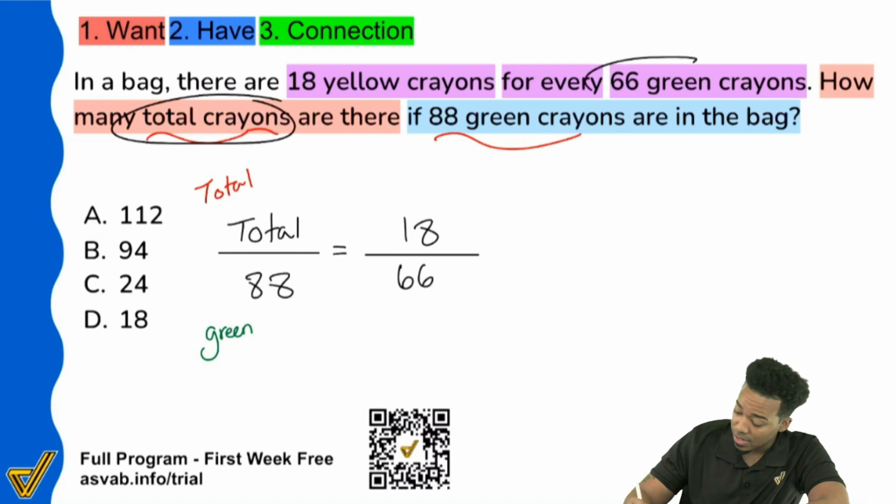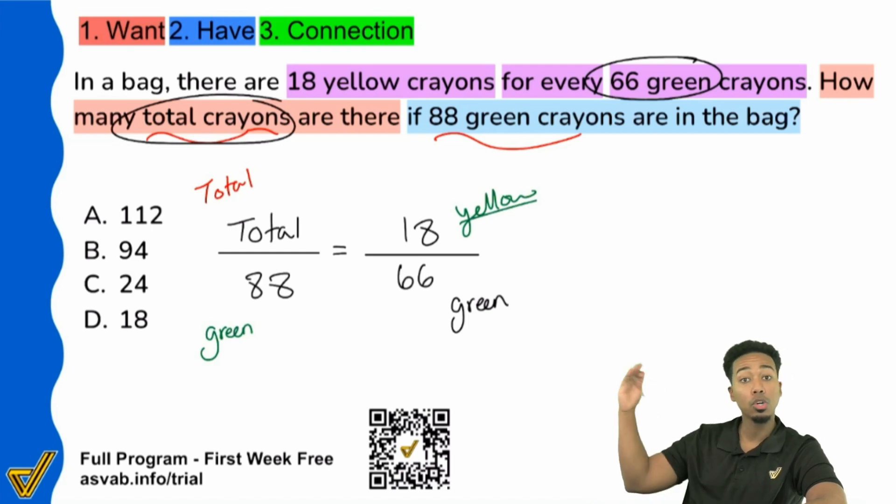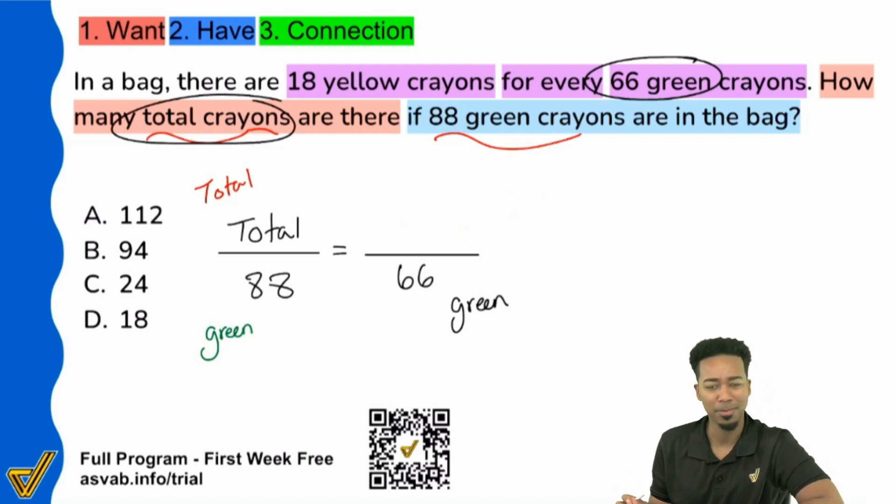Again, the 66 green, that's right there. That's good. That's fine. But the 18, that does not represent total. We have to compare the same things in the same way. Yeah, that's green, but the 18 represents yellow. And that is not correct. We want total over green, total over green. Again, compare the same things in the same way. Write that down if you didn't know that already. And also, if you see that this is making sense, please go ahead and leave a comment letting me know how much this helped you. Just take a quick moment to do that.